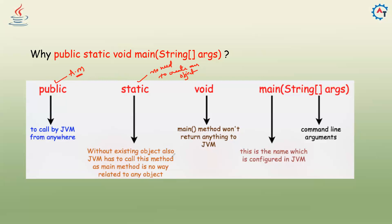If you create a class without a main method, you cannot execute anything. Even if you have other methods, you need to call those methods inside the main method. The main method is where execution starts, so it is declared public, and static so no object creation is needed to call it. Main method won't return anything to JVM, so it is declared void.